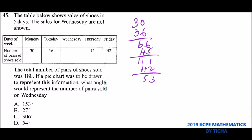The total number of pairs of shoes sold was 180, so we subtract 153, and we get 27. So that means 27 pairs was sold on Wednesday, which we can even put here: 27.